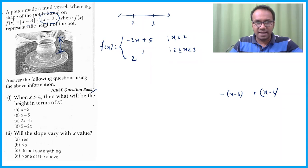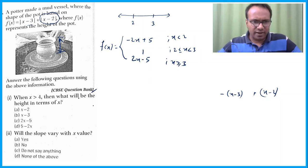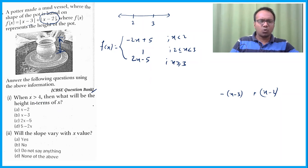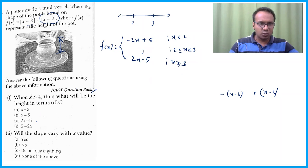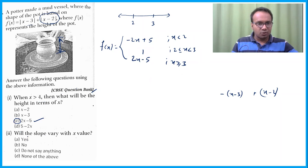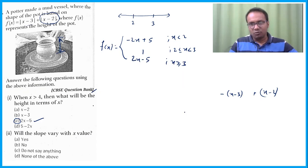When x ≥ 3: both terms are positive, so f(x) = (x−3) + (x−2) = 2x − 5. So the three-part definition is: f(x) = −2x+5 for x < 2, f(x) = 1 for 2 ≤ x < 3, and f(x) = 2x−5 for x ≥ 3. When x > 4, f(x) = 2x − 5, which is option C.